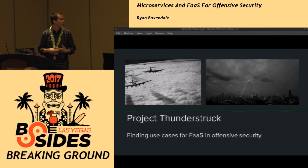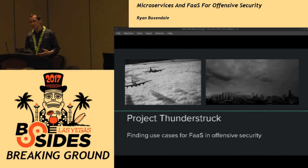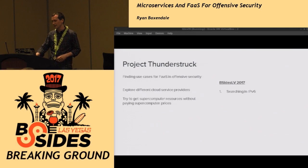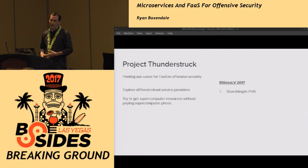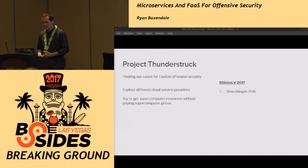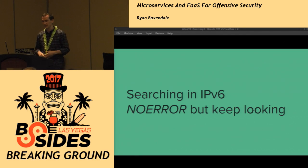This led me to start Project Thunderstruck — finding use cases for Functions as a Service in offensive security. My whole goal is to explore the different cloud service providers and try to get supercomputer resources without paying supercomputer prices. Today at B-Sides I'm going to be talking about searching in IPv6.